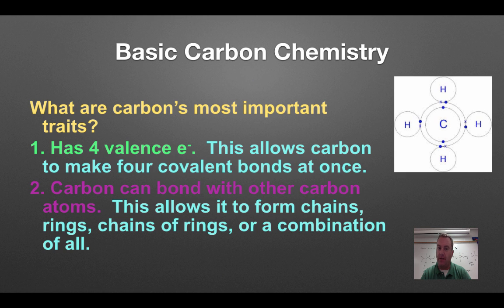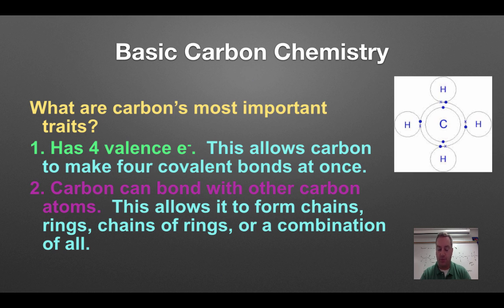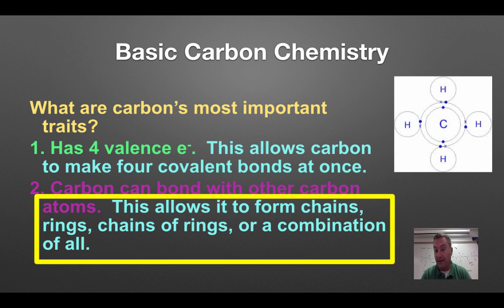In chapter 2, when we're talking about chemistry, one of the main things we're going to talk about is the basic chemistry of carbon. What's unique about carbon is it has four valence electrons. Therefore, it will want to bond with four things at once, including itself. So we can bond with other carbon atoms, which will allow it to form chains, rings, rings of chains, chains with rings attached, et cetera.